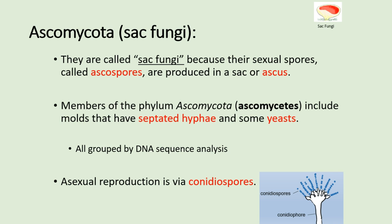The Ascomycetes, the fungi that are in the phylum Ascomycota, are also known as the sac fungi because they produce sexual spores called ascospores, which are enclosed within a sac-like structure called the ascus. Some Ascomycetes don't even produce sexual spores, but are also included in this phylum based on their DNA analysis. The major general characteristics of the Ascomycetes include the formation of septated hyphae, the production of asexual conidiospores, and the production of sexual ascospores.